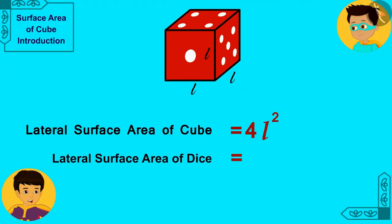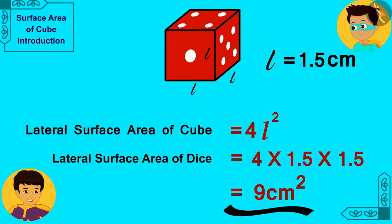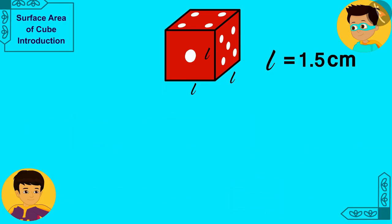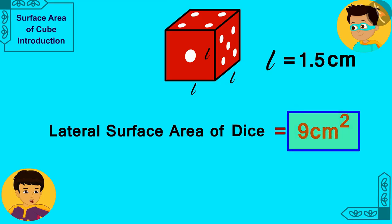Let me write the length of the sides of my dice, that is 1.5 cm, in the formula. Look Thomas, this cube shaped dice has a lateral surface area of 9 cm². This means we will need 9 cm² of paper to cover the lateral sides of this dice.